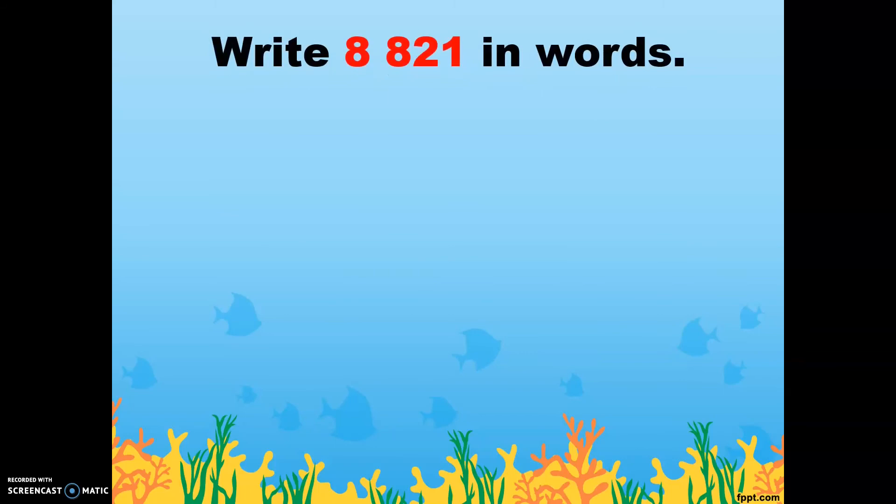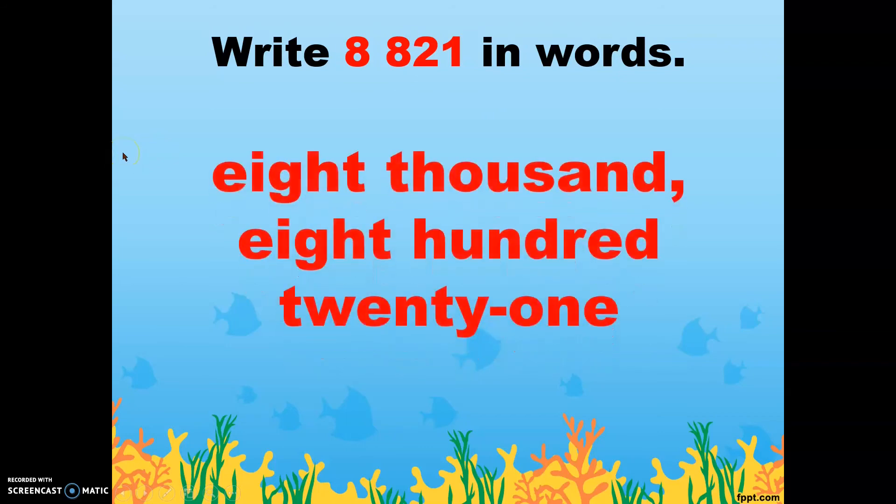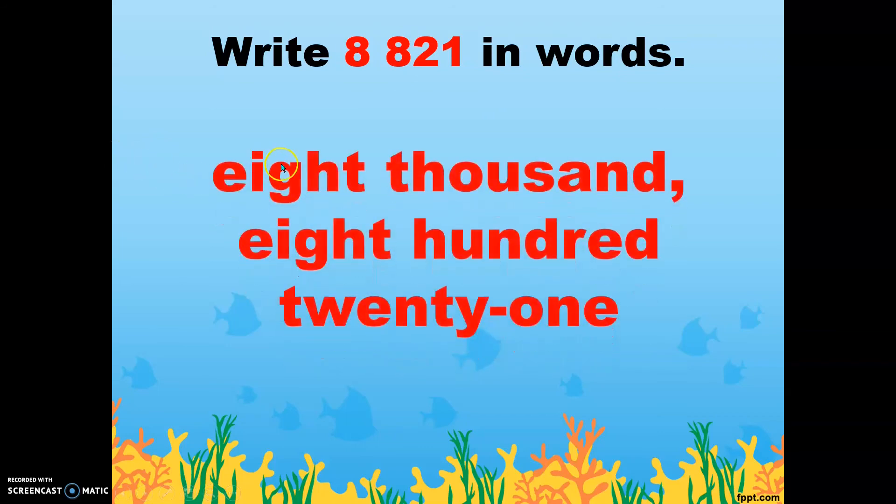Write 8,821 in words. Eight thousand, eight hundred twenty-one. As you can see, we have now a comma to separate thousands period and ones period.